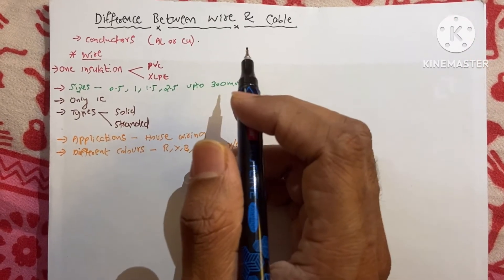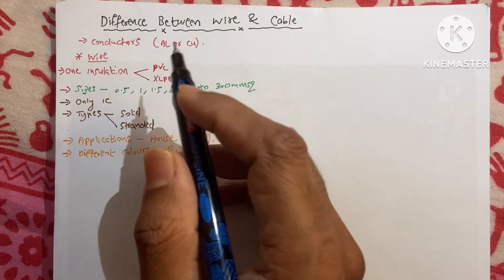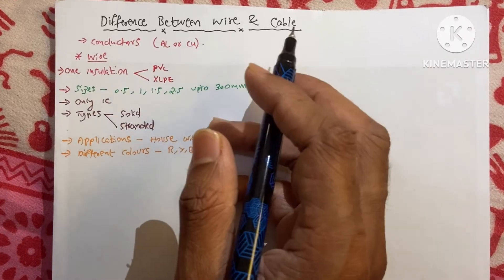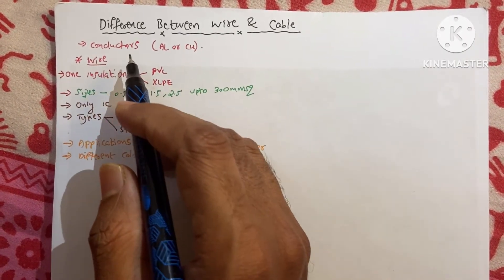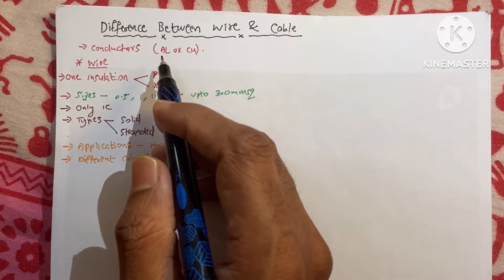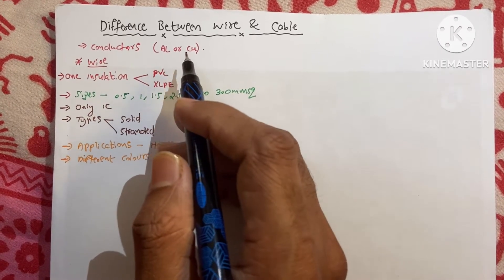Hi guys, how are you? Today our topic is difference between wire and cable. These both are conductors which can be made up with aluminum or copper.